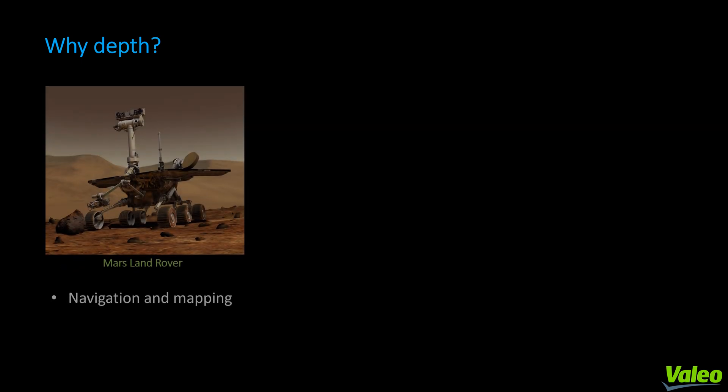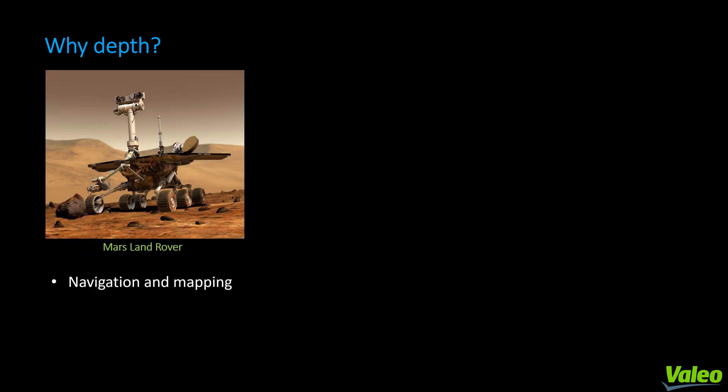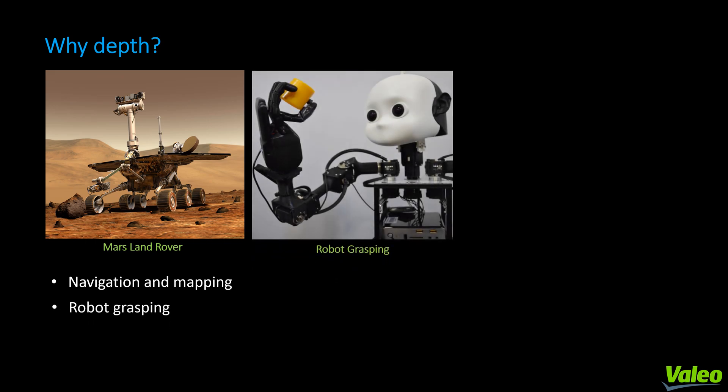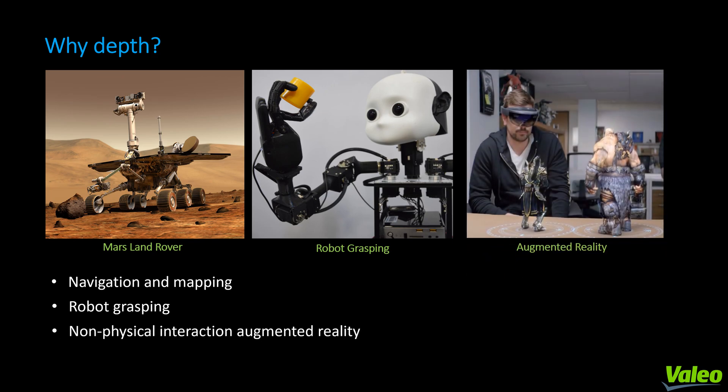A brief overview as to why we are interested in depth. Depth is crucial when it comes to understanding the world around us, such as navigation and mapping. If you are a robot, you would like to know where you are, where you want to go, and how far away things are. If you want to grasp things and interact with the physical world around you, depth is also crucial. Finally, if you want to do non-physical interactions such as augmented reality — for example, placing an object on a table — you want to know how big the table is and how far away it is.